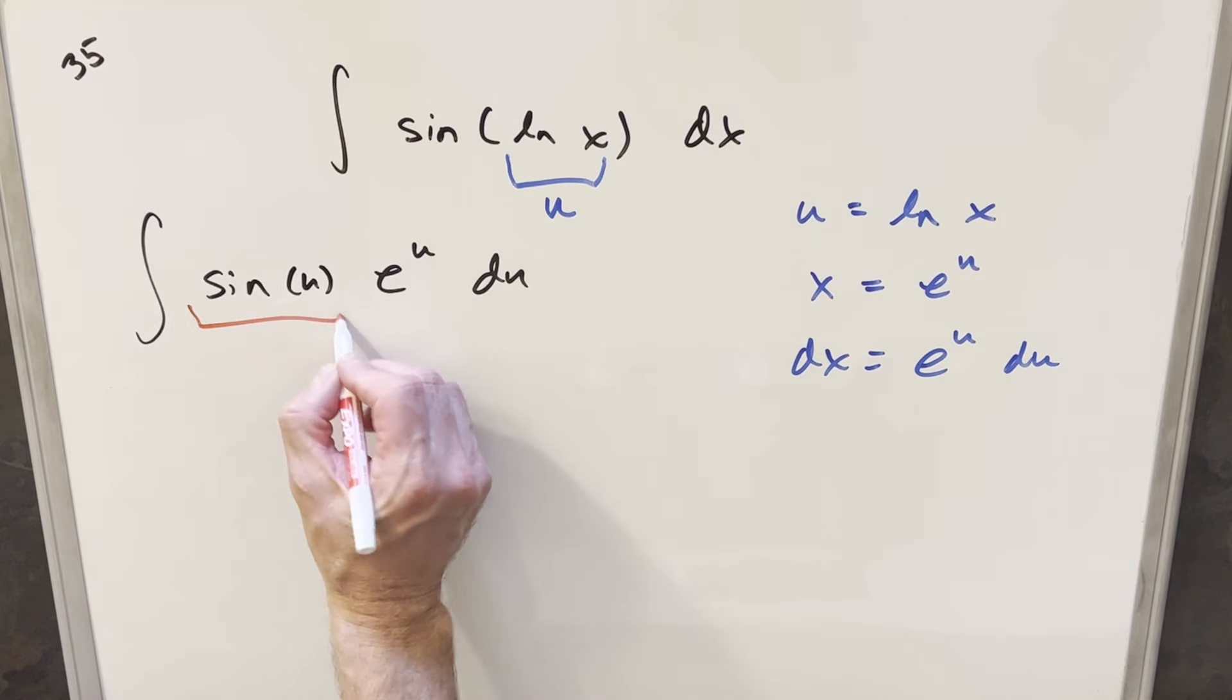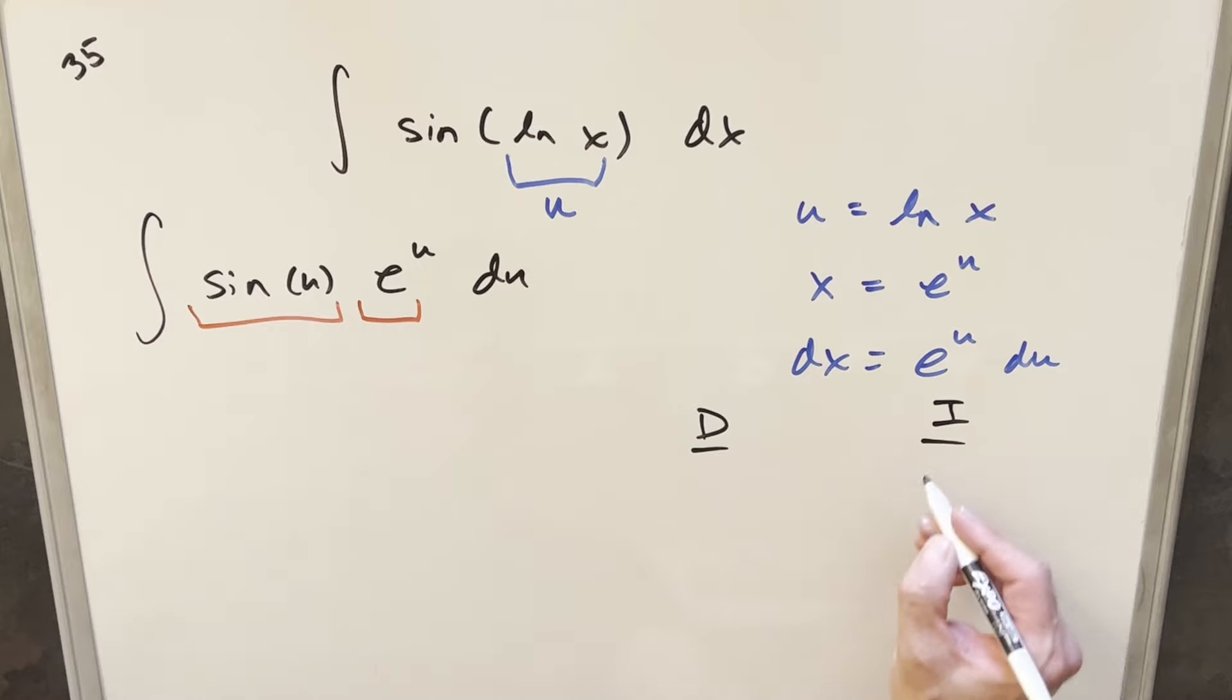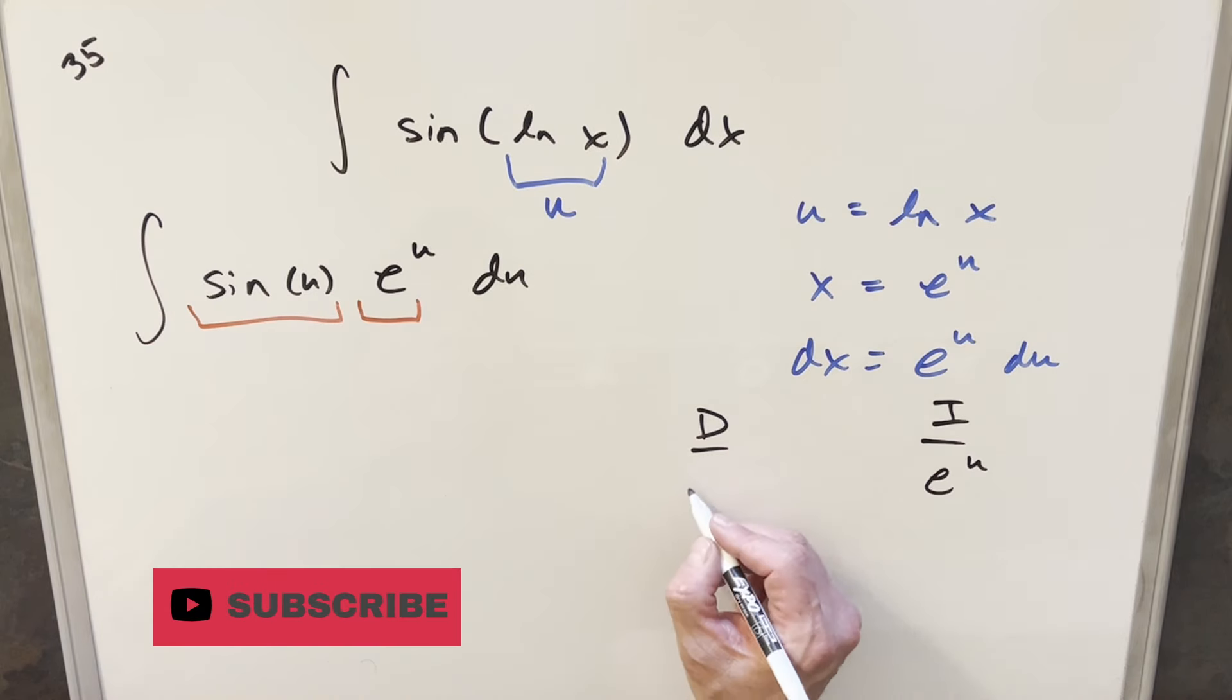Now we've got two things. Let's do integration by parts on this using the DI method or tabular integration. I'll come over here to the right, and it doesn't really matter how I choose this, but I usually like to integrate e to the u and differentiate the trig function, so we'll do it this way.